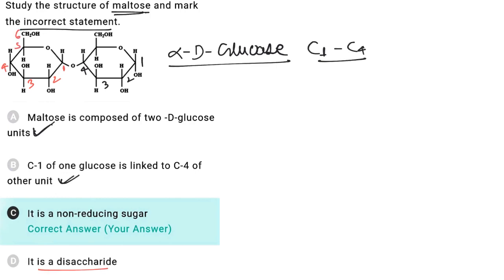It is a disaccharide — true. The statement that it is a non-reducing sugar is incorrect, because if any unit has a free hemiacetal linkage, then it will be a reducing sugar. In maltose, there is a free hemiacetal linkage present, so it is a reducing sugar. The statement given in option C is incorrect, and hence the correct answer is C.